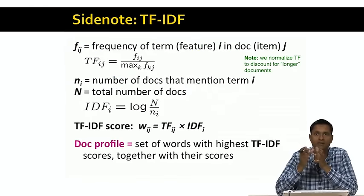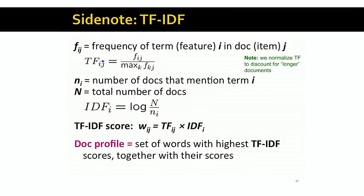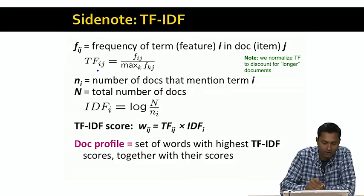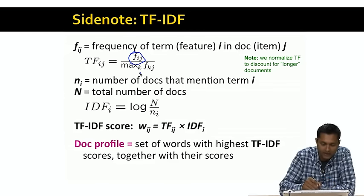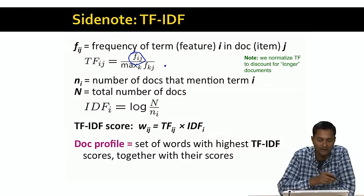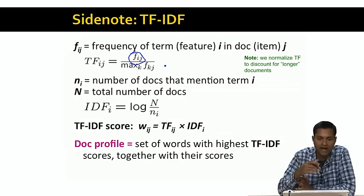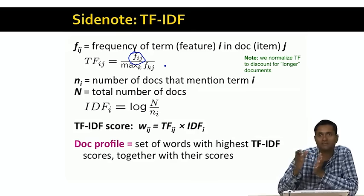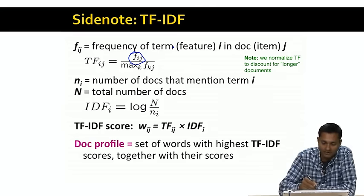Let's say we are looking at document or item j, and we are computing the score for term or feature i. The term frequency TF_{ij} is just the number of times feature i appears in document j, divided by the maximum number of times that same feature appears in any document. For example, let's say the feature is the word 'apple.' In the document we're looking at, the word apple appears five times. But there's another document where the word apple appears 23 times — the maximum across all documents. Then TF_{ij} is 5 divided by 23.